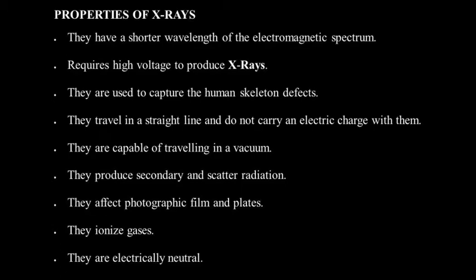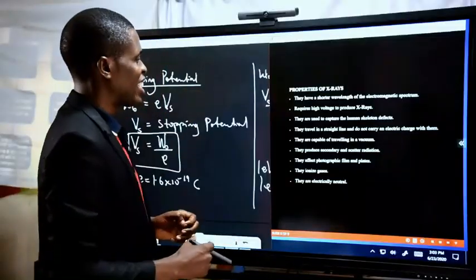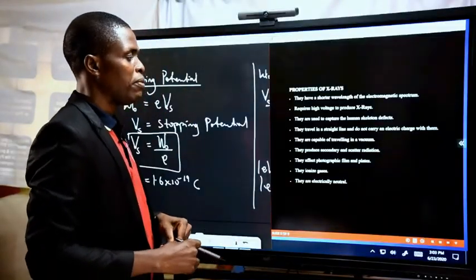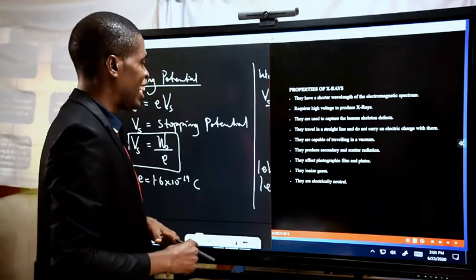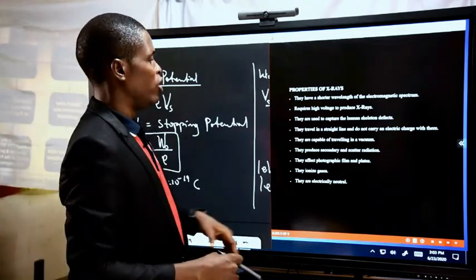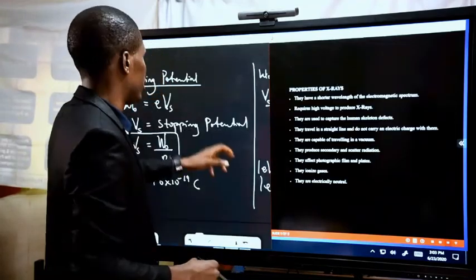X-rays require high voltage to produce. They are used to capture human skeleton defects. They travel in a straight line and do not carry an electric charge. They are capable of traveling in a vacuum. They produce secondary and scatter radiations, affect photographic films and plates, ionize gases, and are electrically neutral.